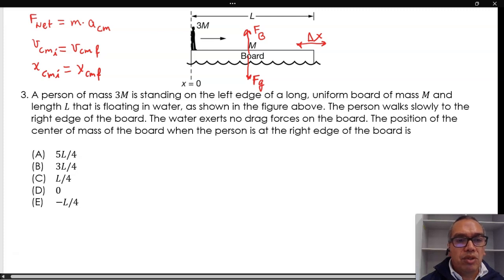The position is given by 3m times 0 plus m times l over 2, the geometric center of the board, divided by 4m. This is equal to l over 8.